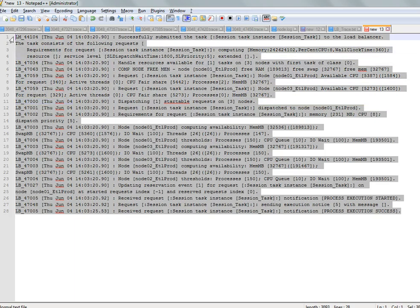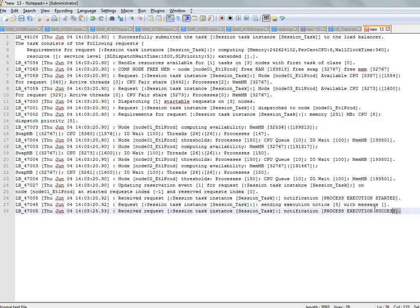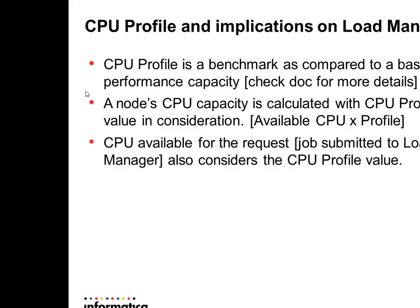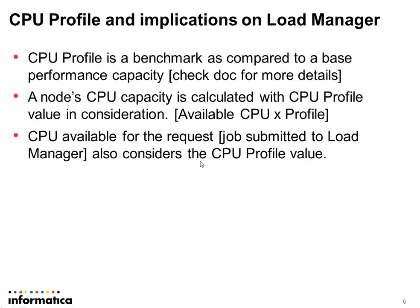This is very helpful when one particular node in the grid is being overloaded or the load is not balanced. The CPU profile is a benchmark compared to a base performance capacity — some Pentium model with a given clock speed is taken as base. If a machine equals the base, the CPU profile value is 1; if higher, the profile is calculated accordingly. You can also calculate it in the administrator console.